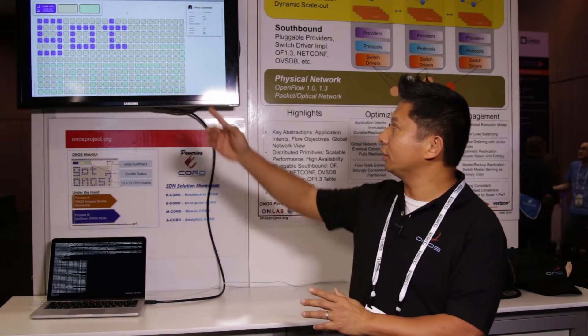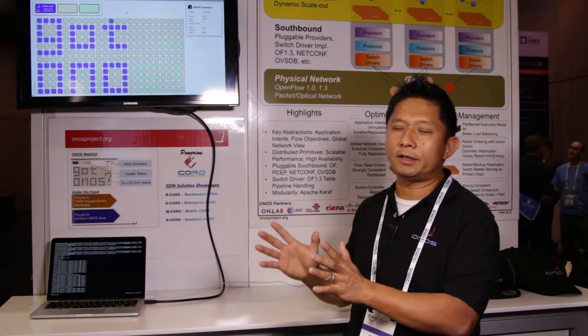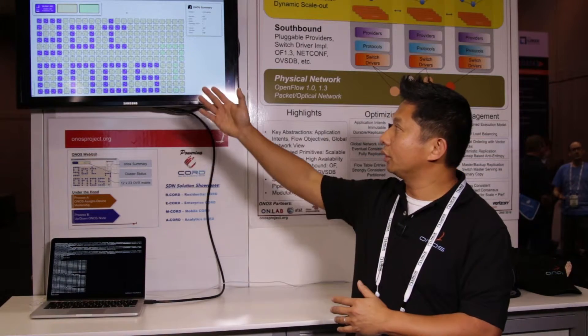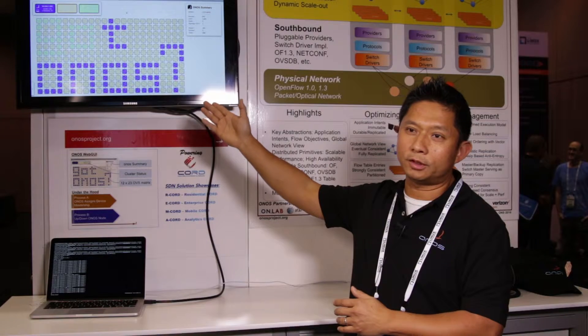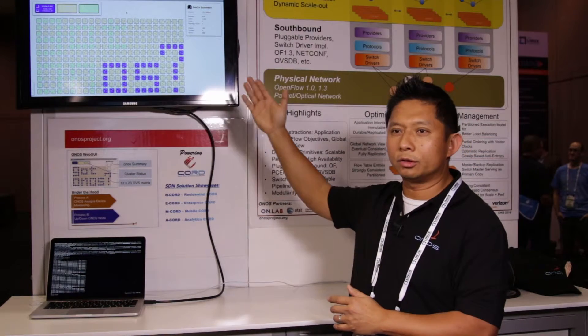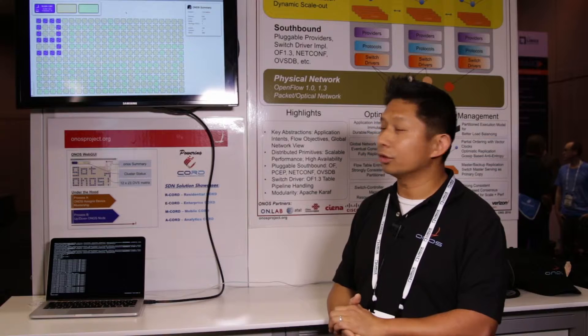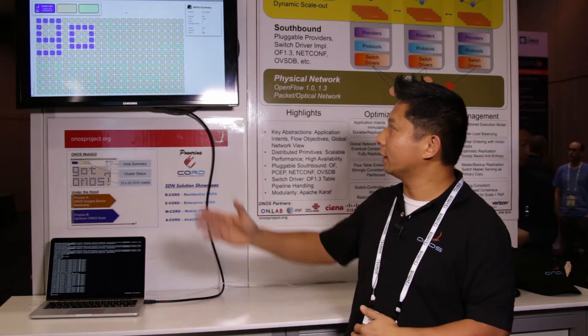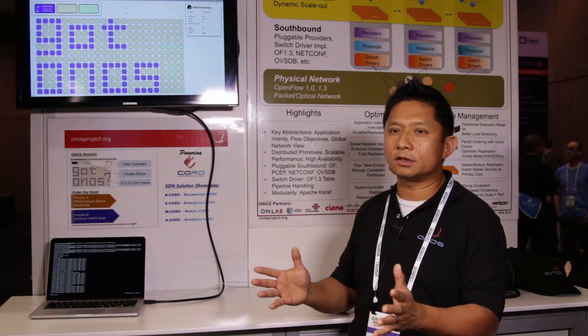By changing the color we print out — it's not merely a pixel manipulation. We're changing the mastership of the OVS switches from one controller to another, and in the background we're also killing ONOS nodes so that the background color is also changing.